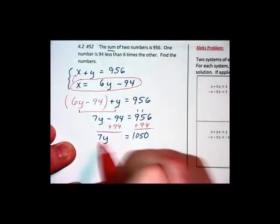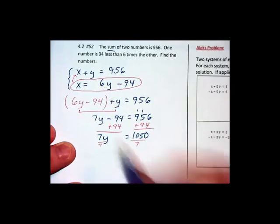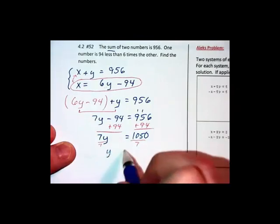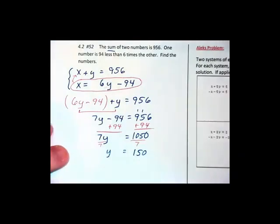And I know that 7 times 15 is 105. So when I divide by 7 instead of getting 15, I'm going to have 150 is my value for y.